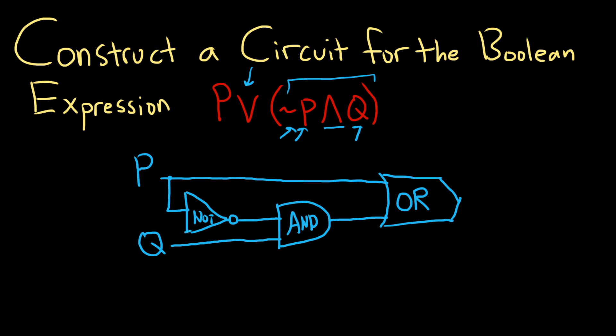We should check our answer to make sure it's correct. You can do that by working backwards. Let's see. So P is going to the OR. We'll deal with that at the end.